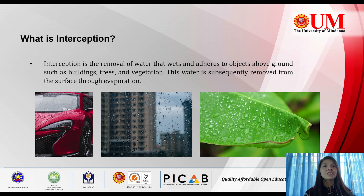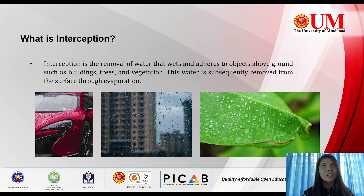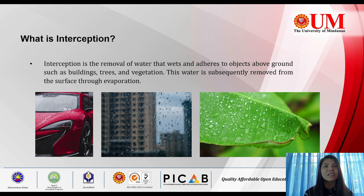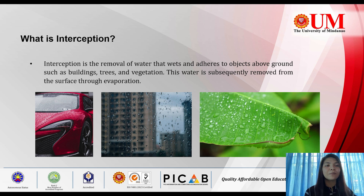Next is interception. Interception is the removal of water that wets and adheres to objects above ground such as buildings, trees, and vegetation. This water is subsequently removed from the surface through evaporation. Interception refers to water that does not reach the ground surface — it sticks to surfaces like glass or buildings as shown in the picture. The quantity of water removed through interception is usually not significant for an isolated storm, but when added over a period of time, it can be significant.